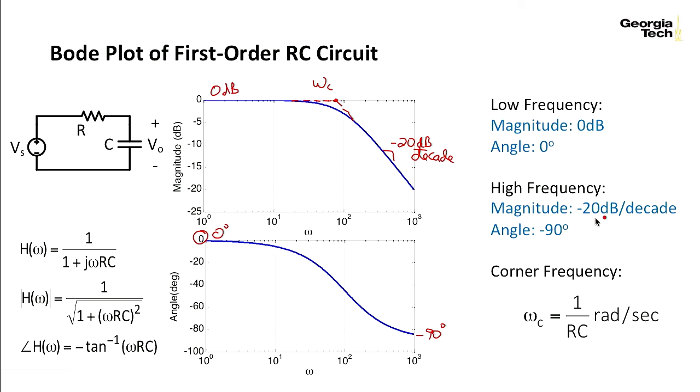At high frequency, the magnitude has a slope, minus 20 dB per decade, angle of minus 90. The corner frequency I've defined as omega sub c according to the plot here. Now this particular plot was drawn for particular values of RC. But it turns out no matter what RC is, that corner frequency always occurs at 1 over RC.